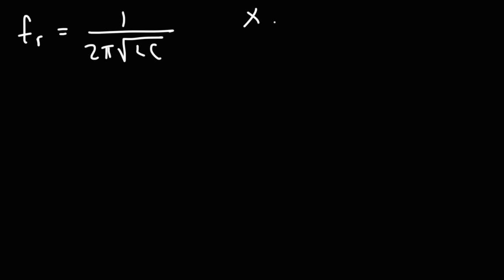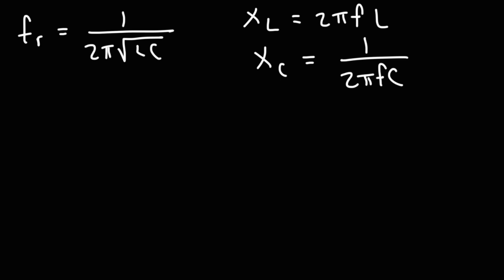There are two other formulas you need to be familiar with. The inductive reactance of an inductor, represented by XL, equals 2π times F times the inductance — it's an impedance the inductor presents against an AC signal, and as frequency goes up, this opposition increases. The capacitive reactance XC equals 1 over 2πFC. As frequency increases, inductive reactance goes up but capacitive reactance goes down, and there is a point where these two are equal — that's when the circuit will resonate at a certain frequency.